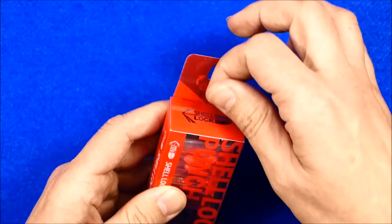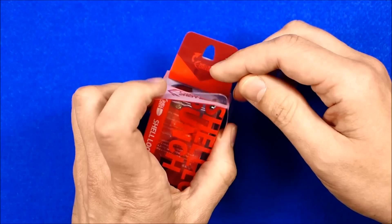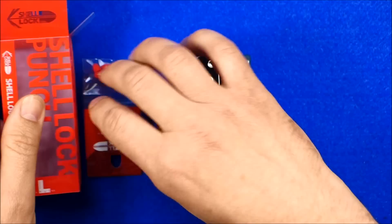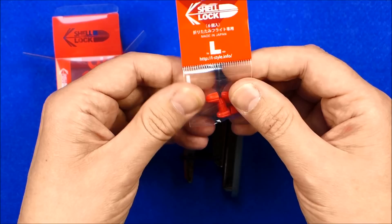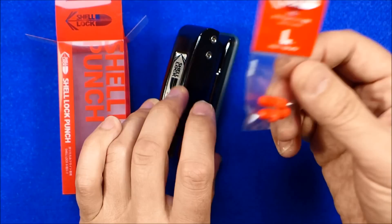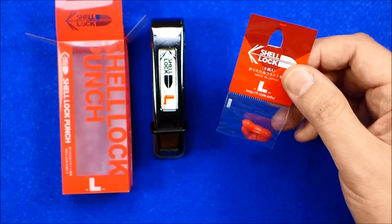At the moment Darts Warehouse is selling the shell lock punch with four extra bags of rings. You get a bag of six of the shell lock rings and you can buy the ring separately which is £2.30 I think on the dartswarehouse.com website.